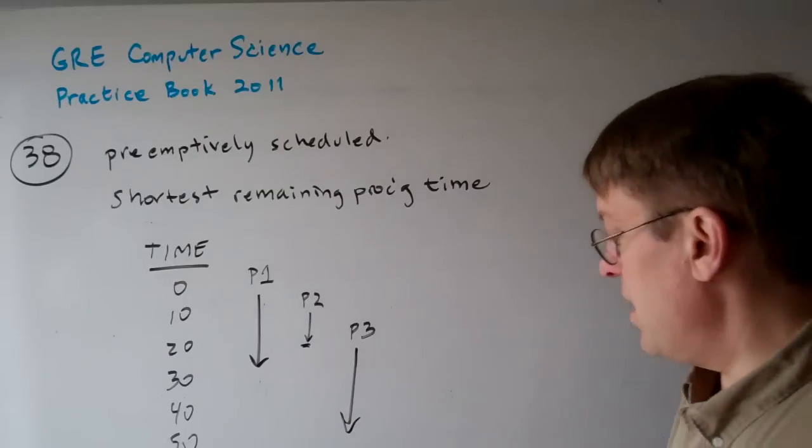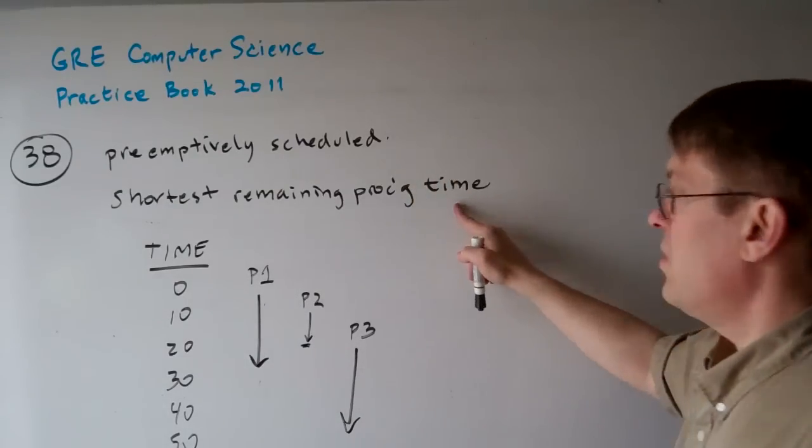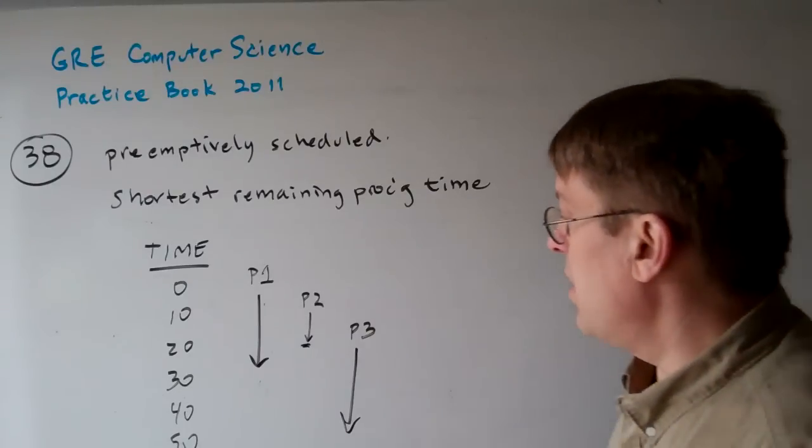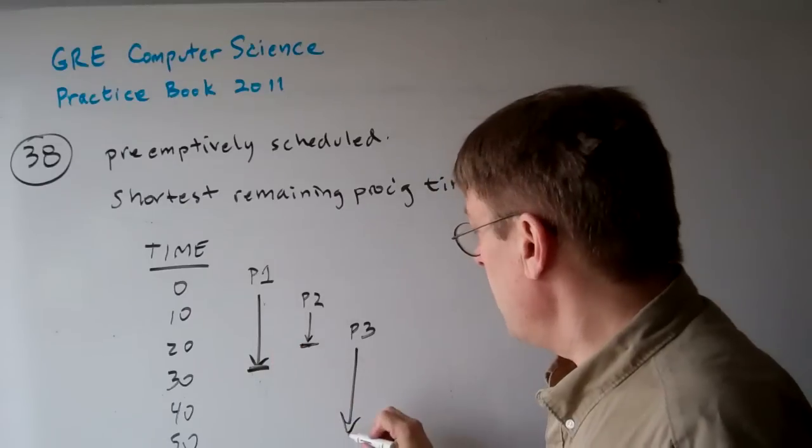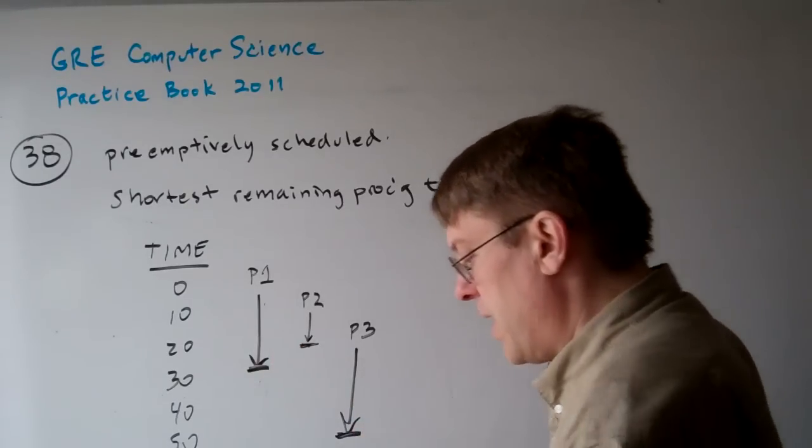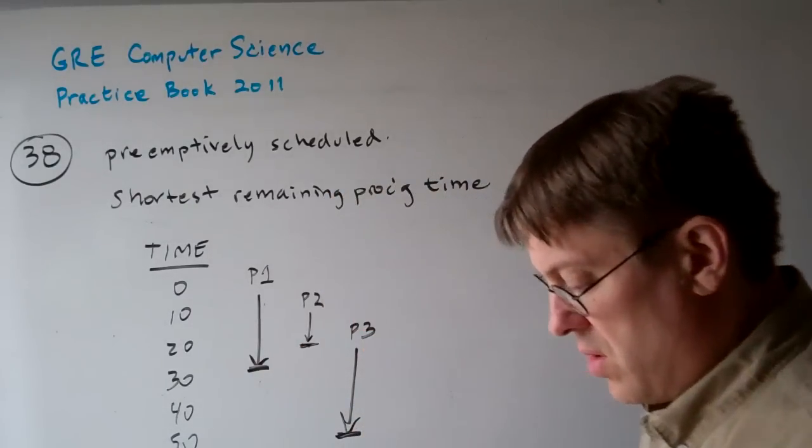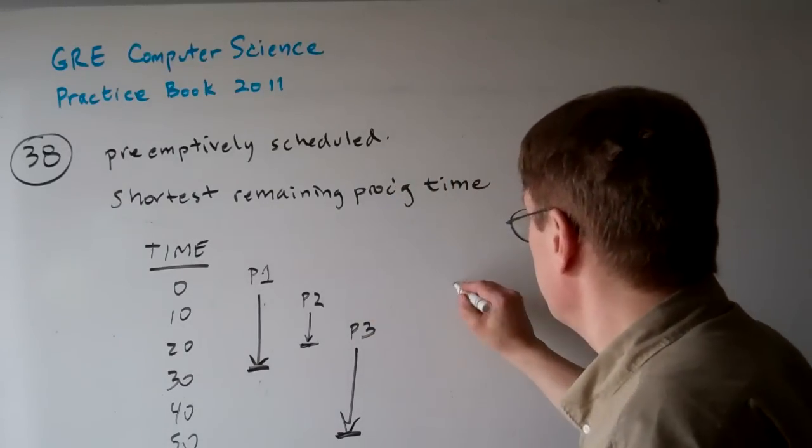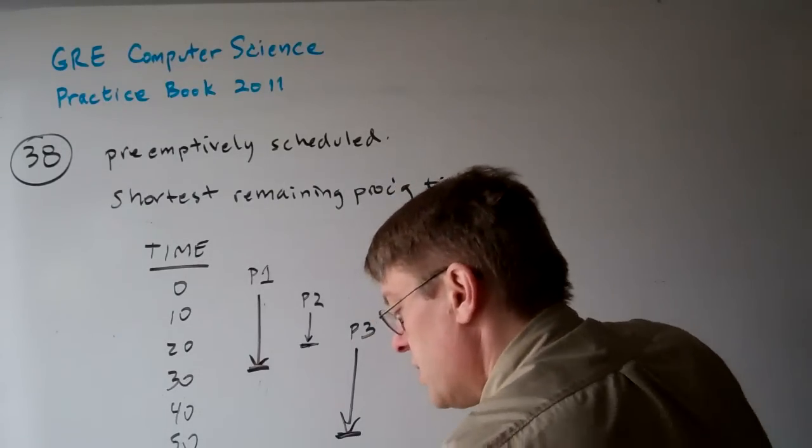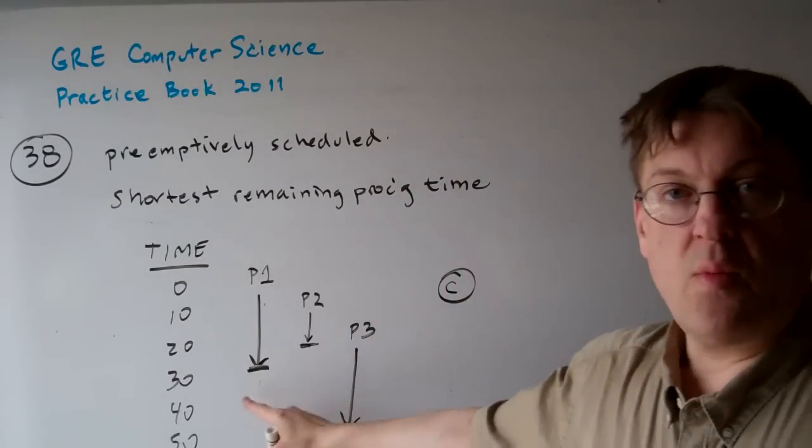So it's not hard to see that we're doing a shortest remaining processing time. P2 is going to be done first, P1 is going to be done second, and P3 is going to be done last. So the answer is C: P2, P1, P3.